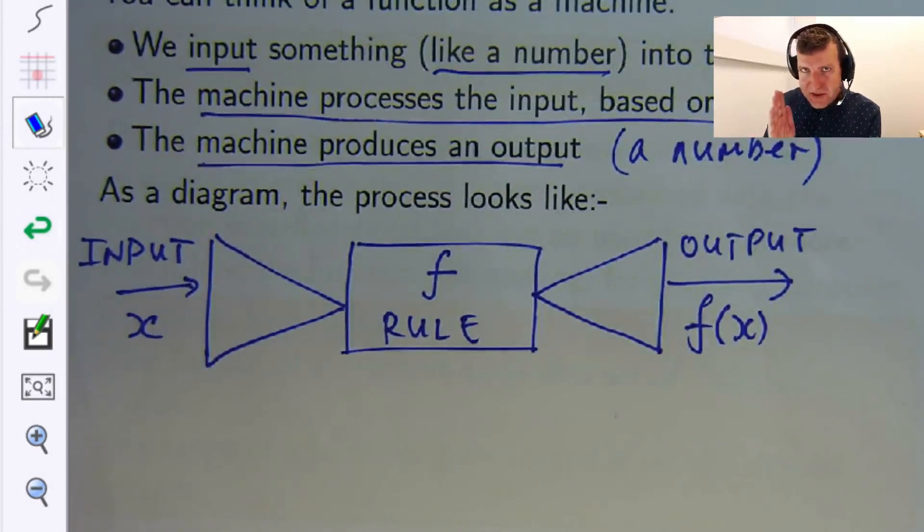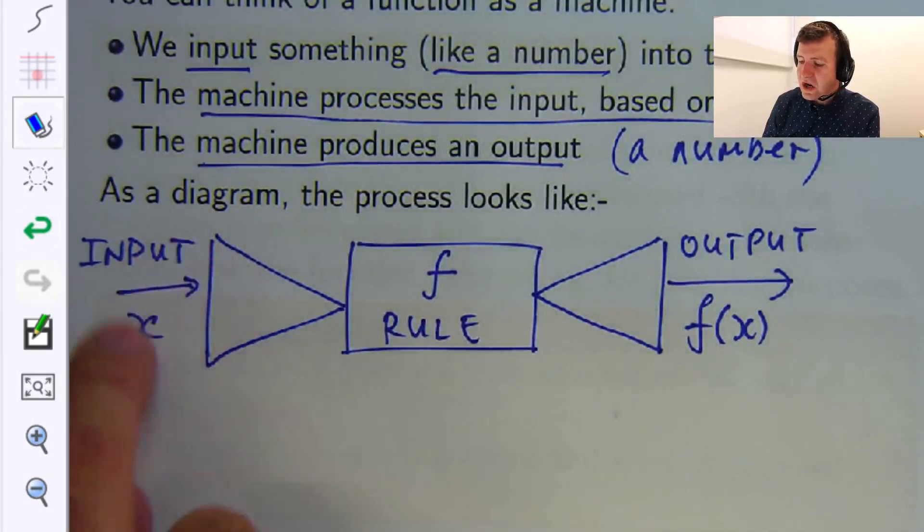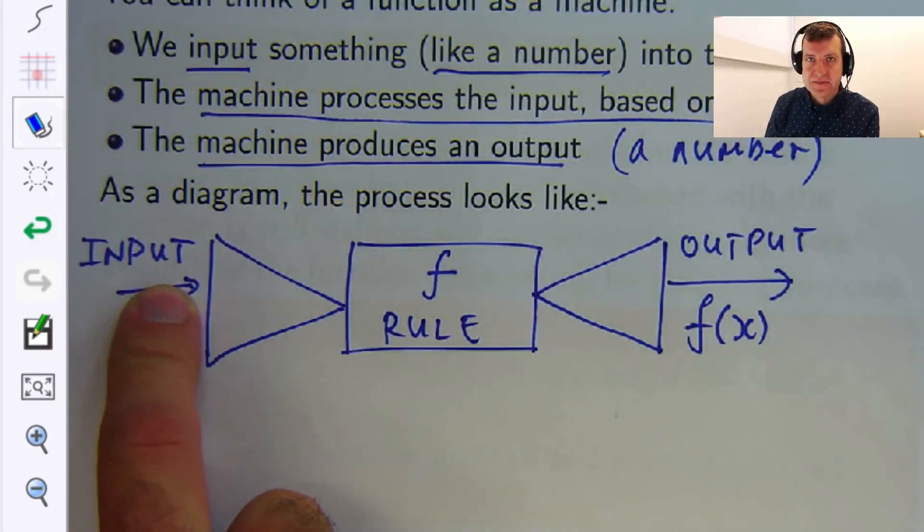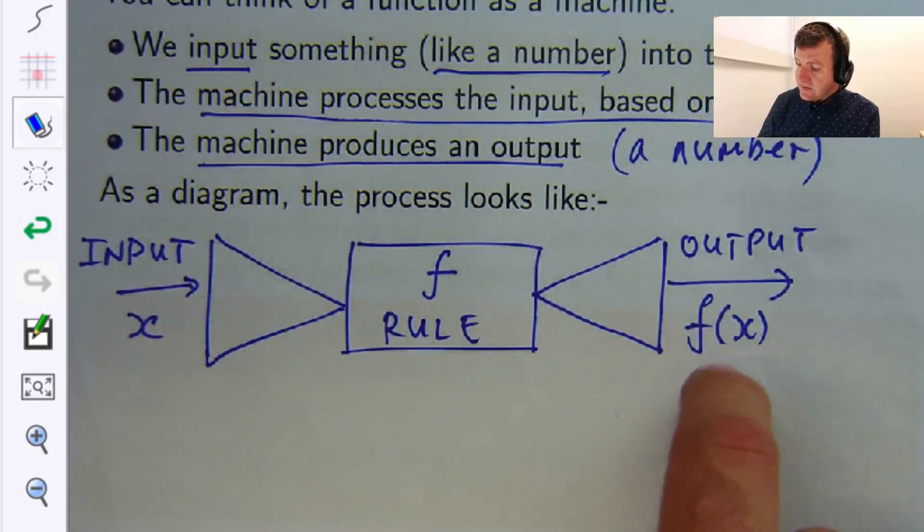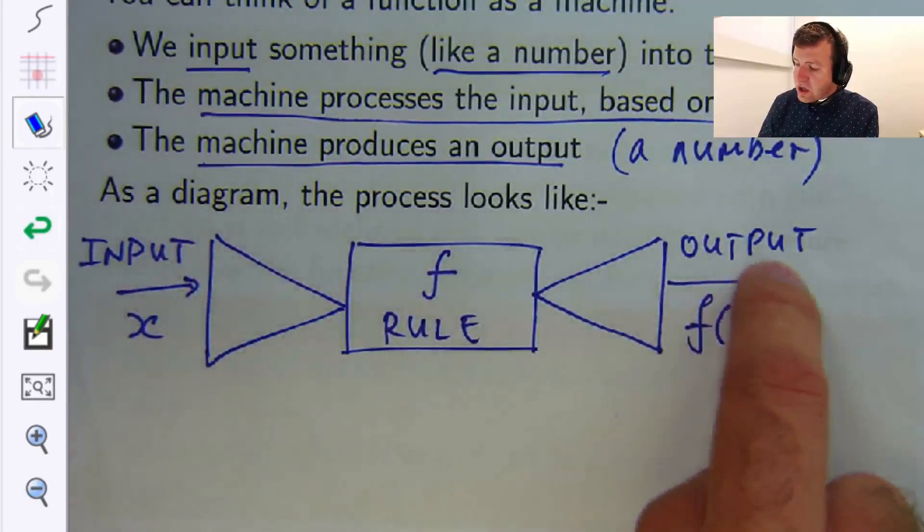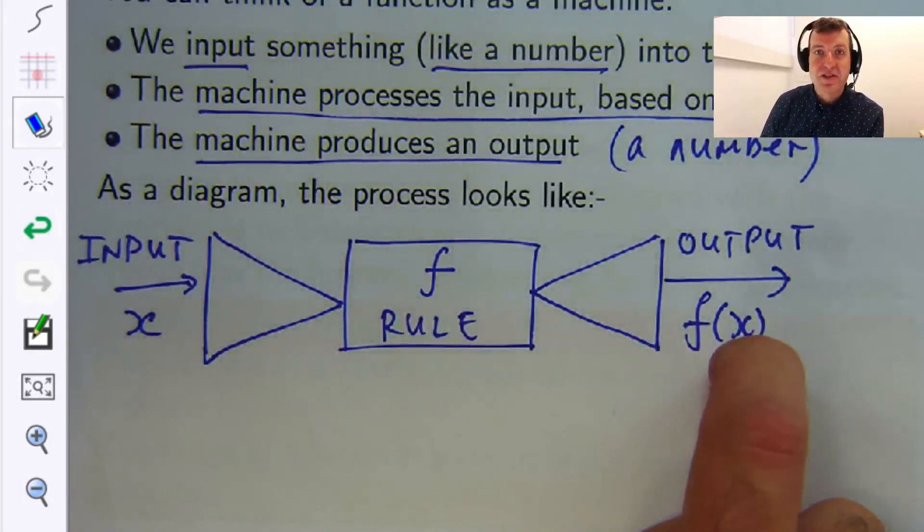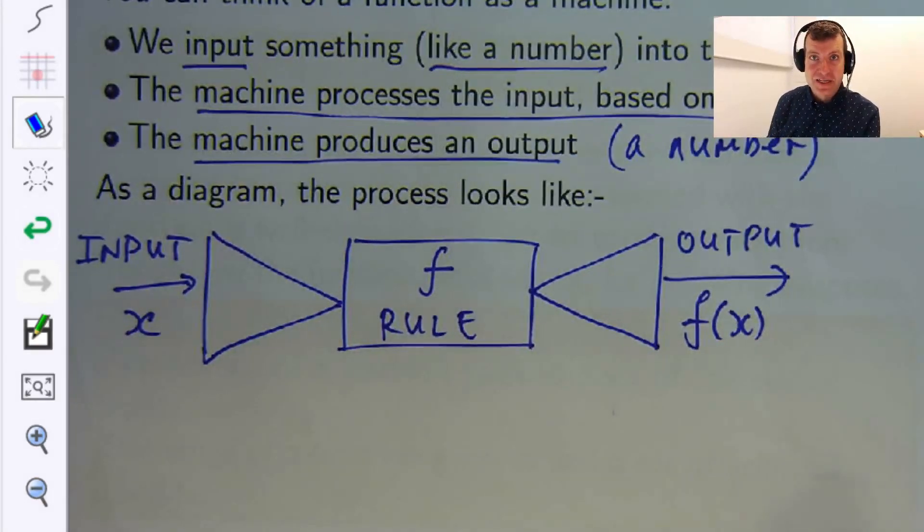Now the important question that we're going to answer in this video is: what kinds of inputs are okay for certain functions? And if the input's okay, then what kind of output can we expect? You might think well, what kind of numbers can I put into a given function? And what kind of numbers will I get out of a given function?